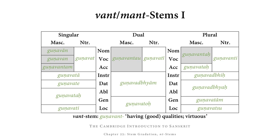Starting with the singular forms, we get gunaván, gunaván, gunavantam. As often with consonant stems, the nominative and vocative singular have a slightly unpredictable form, so these we just need to memorize: gunaván, gunaván. Then gunavantam — that is, guna plus the strong stem want, and then our accusative singular ending am added without any internal sandhi. In front of the a, the t remains as it is: gunavantam. The rest of the singular is all weak, using the stem gunavat, to which endings a, e, as, as, i are added.